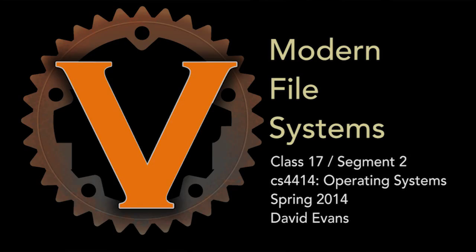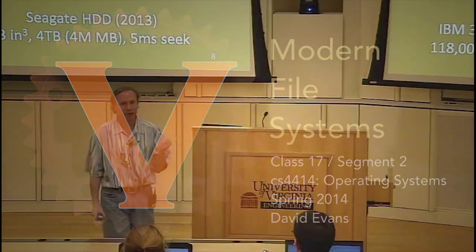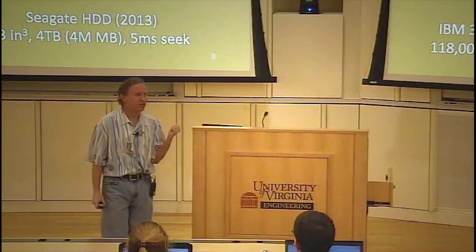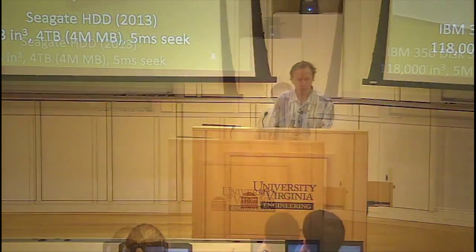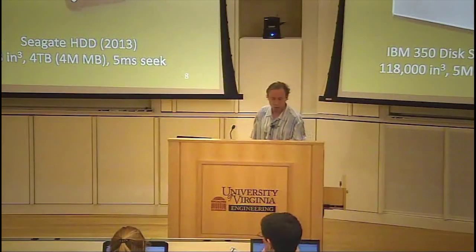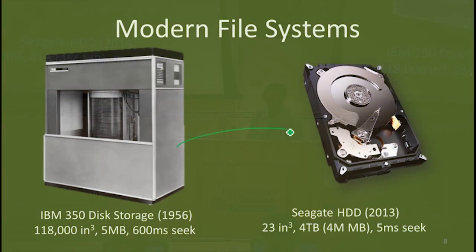Modern file systems are quite different from what I've been talking about. Unix System 5 is our canonical example of a traditional file system. There's one really big reason why, which you can see here.